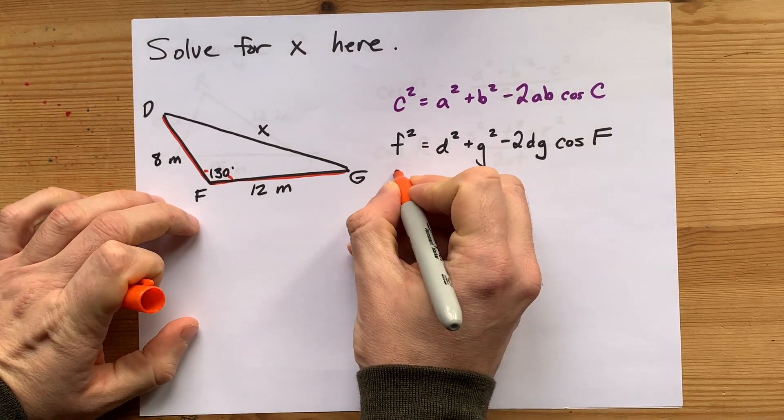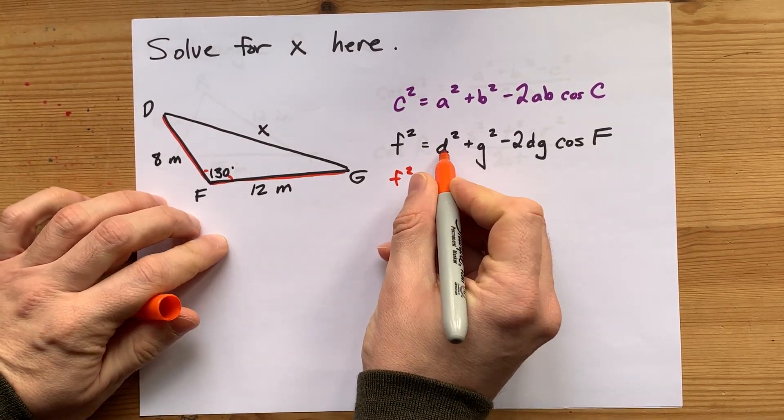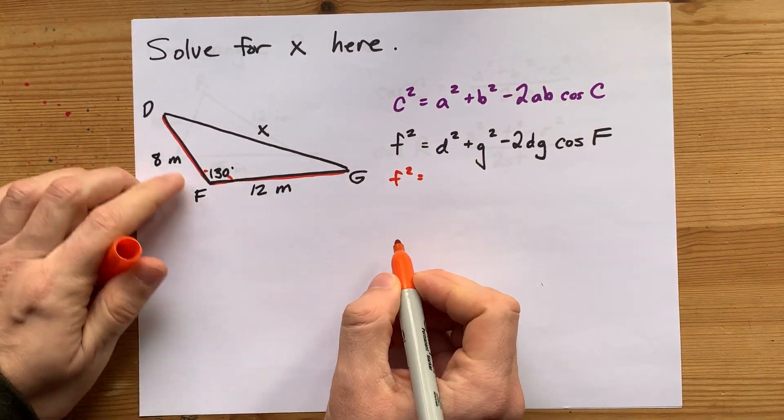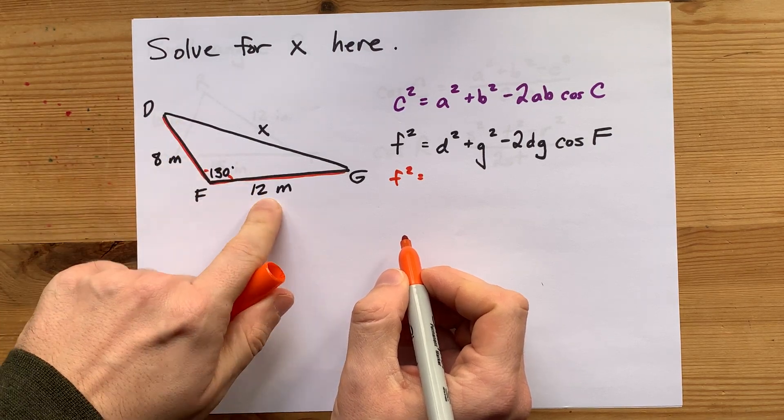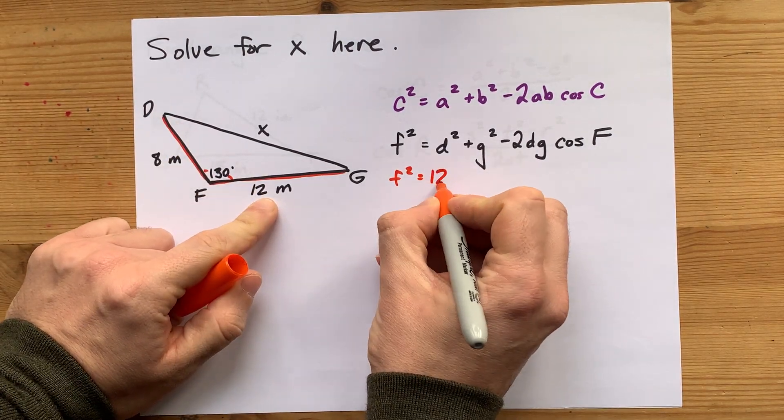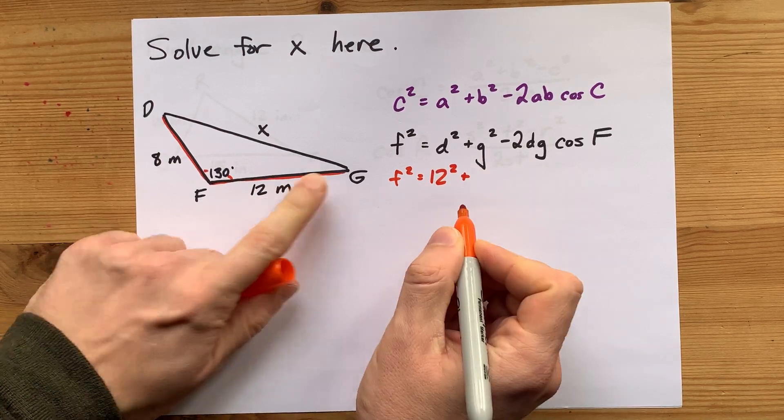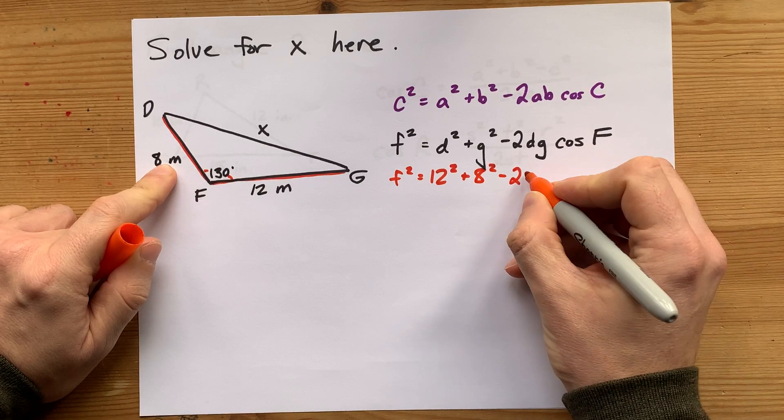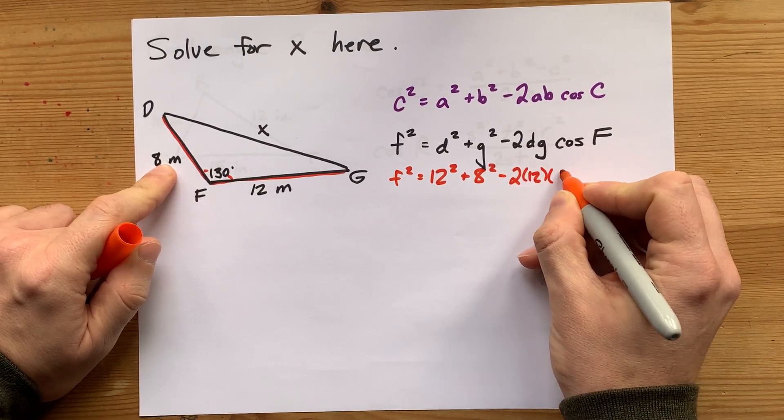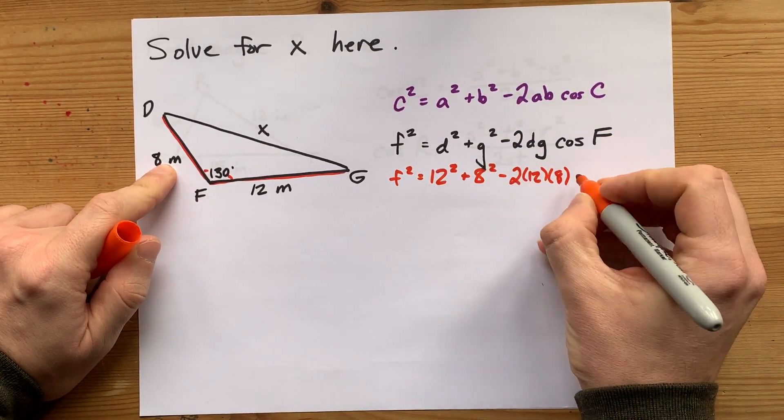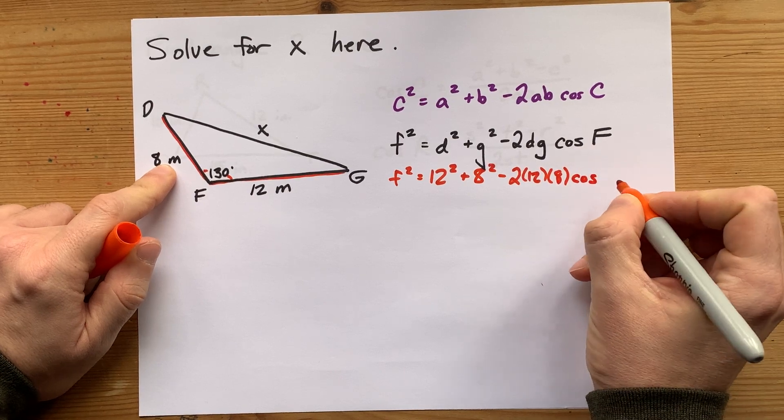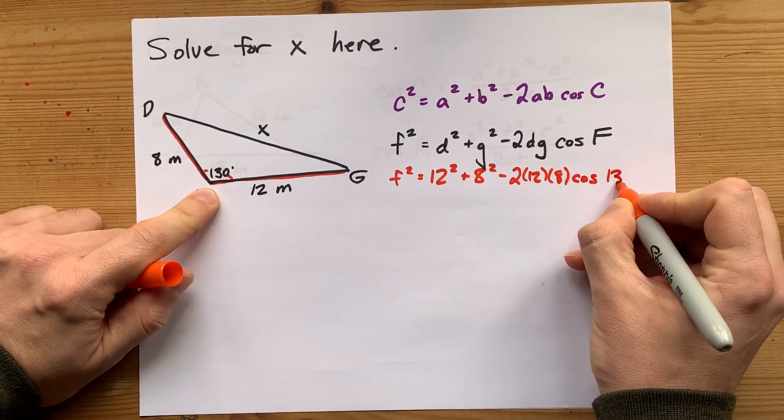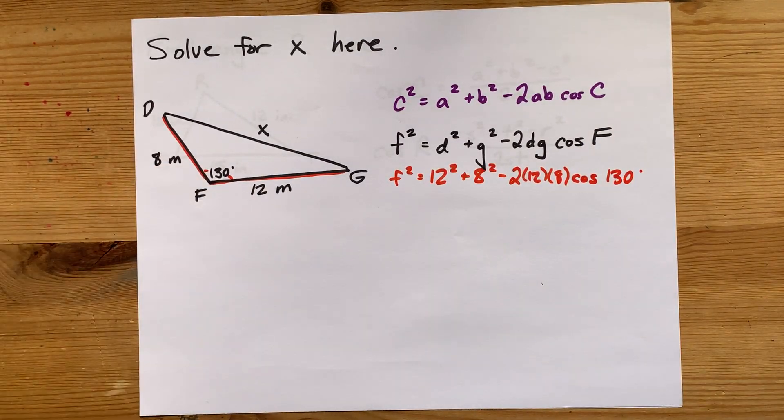If I'm solving for F squared, the length of D squared, well, little d is 12 squared. Little g is 8, which is also squared. I'm going to replace that D with 12 and that G with 8, just like I did earlier. And I have to multiply by the cosine of the angle that's in between them. Here it's 130 degrees.